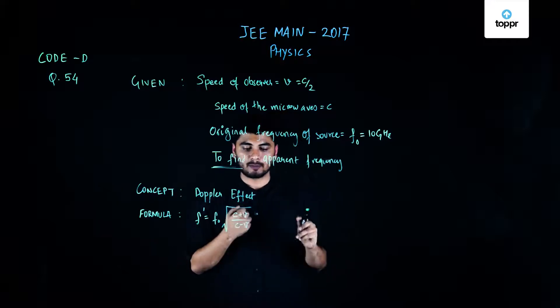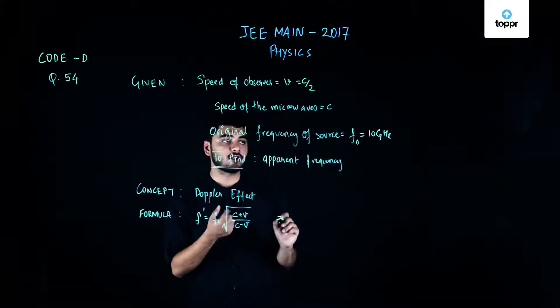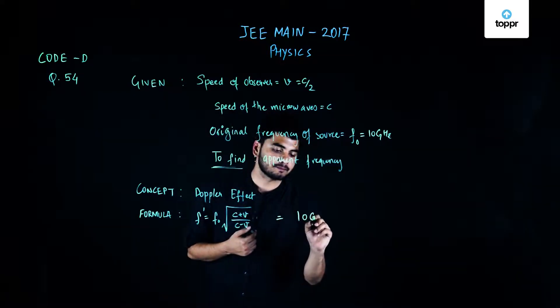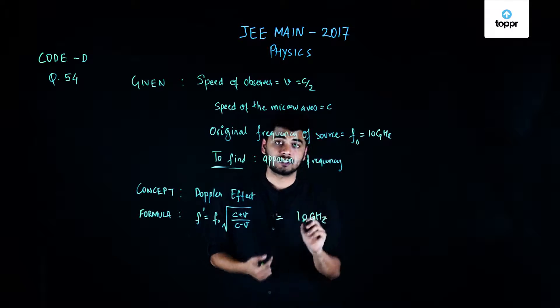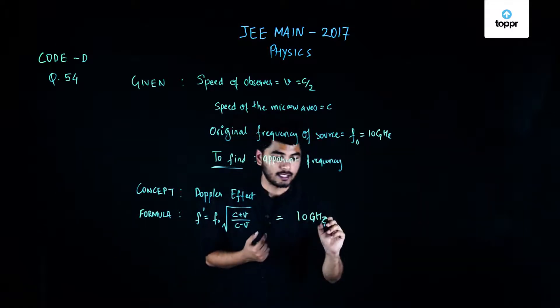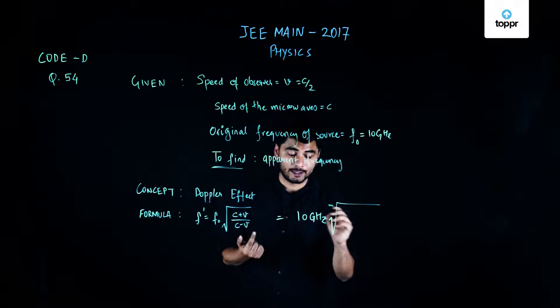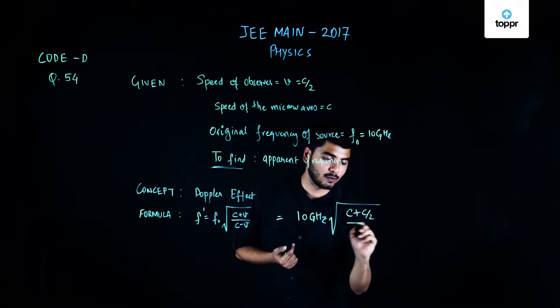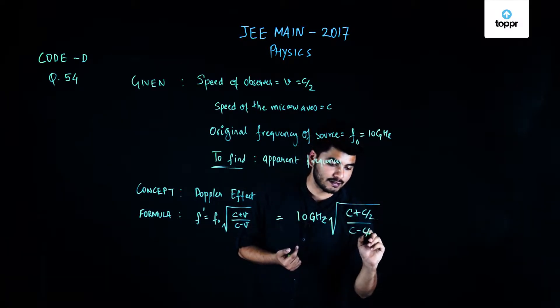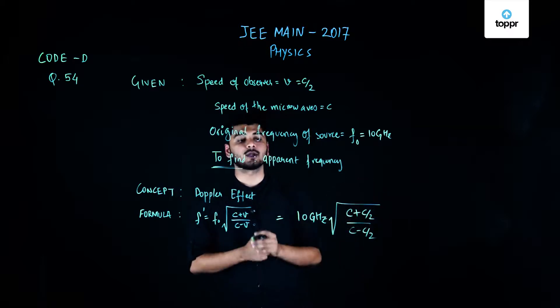If I put the values into this formula, F' equals 10 gigahertz times the square root of c plus v, where v equals c by 2, divided by c minus c by 2. Please note I have been using my units very carefully in every solution. You must do the same.